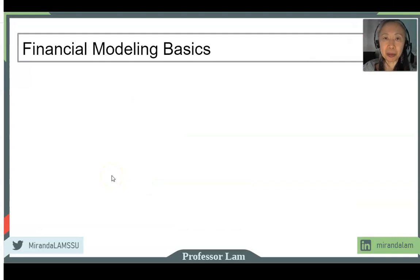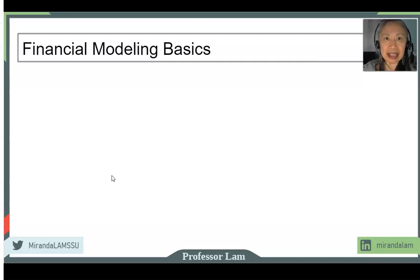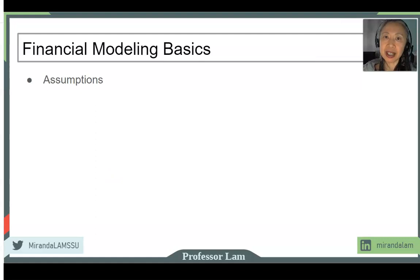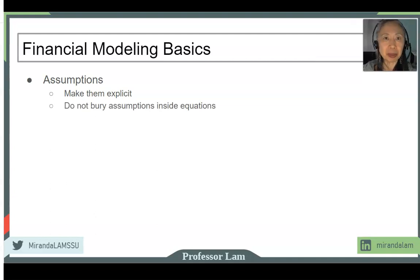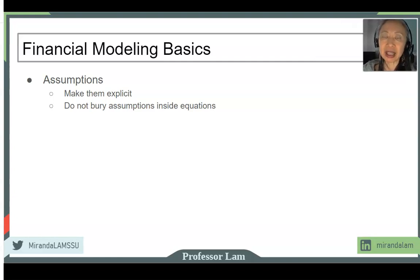When you create a performance statement, you are actually building a financial model. There are some modeling basics important to create a performance statement that is easy to maintain, minimizes mistakes, and is easy to share. First and very important: make your assumptions very clear in your model — make them explicit. Do not bury your assumptions inside equations. Your assumptions should be in a separate area, highlighted and clearly labeled, so that anyone looking at your financial performance statements will know exactly what assumptions lie behind the model.